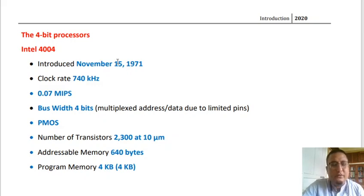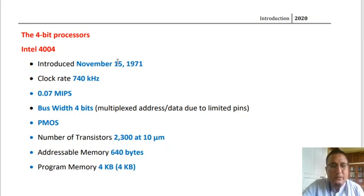Hello, good afternoon to all of you. I hope all of you are doing well. In today's class we are going to discuss a few of the notable microprocessors that were released. These microprocessors are categorized into four different categories: 4-bit microprocessor, 8-bit microprocessor, and 16 and 32-bit microprocessor. We are going to start with the microprocessor descriptions.